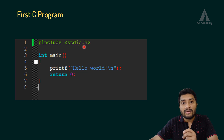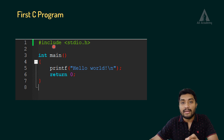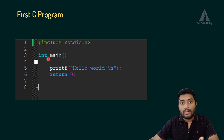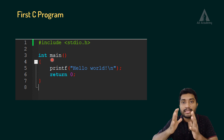In the stdio.h header file, functions are already defined. That code we can see here — we have the int main. This main is the function. We have the return type, then the function name, then opening and closing parenthesis. The main function is the C program entry point — that is where C program execution starts.